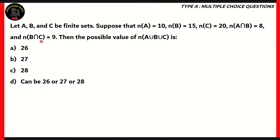Here's our first question. Let A, B, and C be finite sets. Suppose that N(A) is 10, N(B) is 15, N(C) is 20, N(A∩B) is 8, N(B∩C) is 9. Find the possible value of N(A∪B∪C), the number of elements in A∪B∪C.